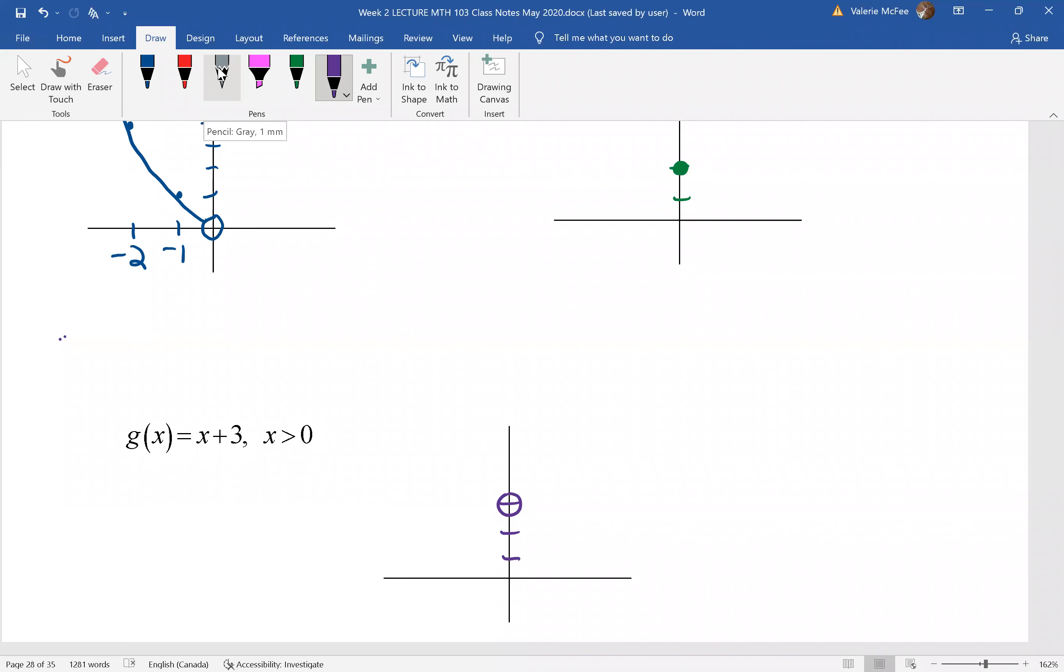So there's my open circle at (0,3). And the equation is x plus 3 if x is greater than 0. So this time we're heading to the numbers greater than 0. If x equals 1, y would be 4. If x equals 2, y would be 5. And of course, this is a linear equation, so we know we have a straight line here.